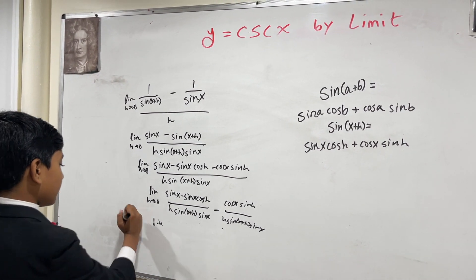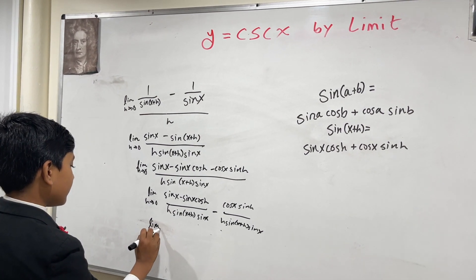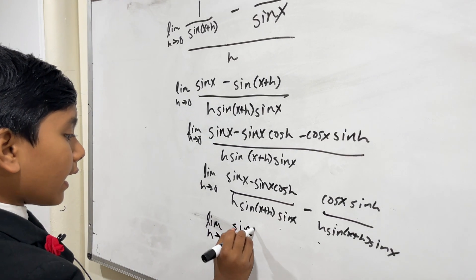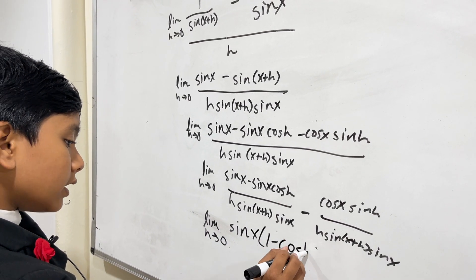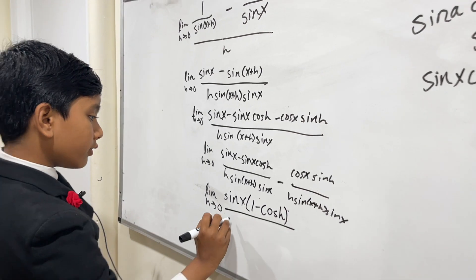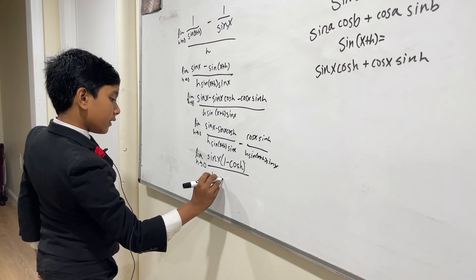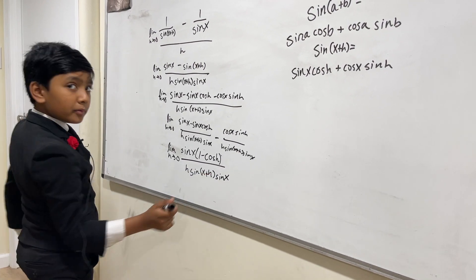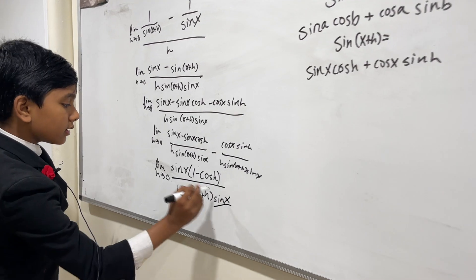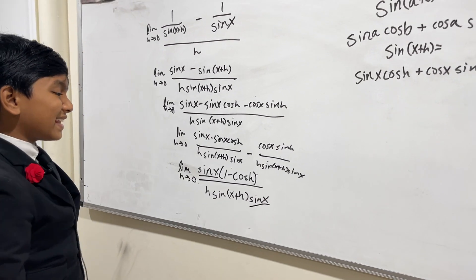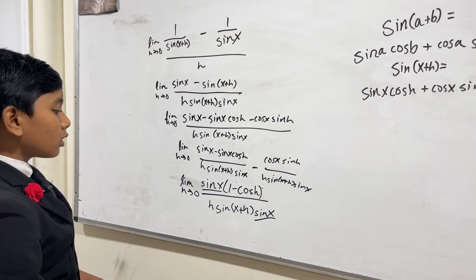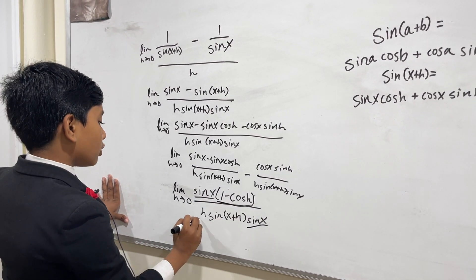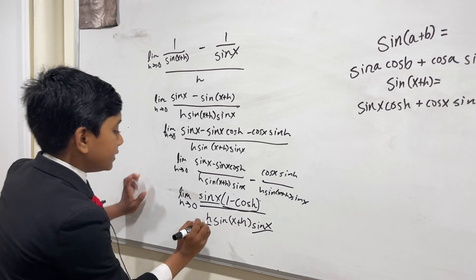So we get the limit as h approaches 0 of sine(x) times (1 minus cosine(h)) over h times sine(x + h) times sine(x). You might notice there are cancellable factors, but what matters more is that we have (1 minus cosine(h)) over h, which as h approaches 0 goes to 0.